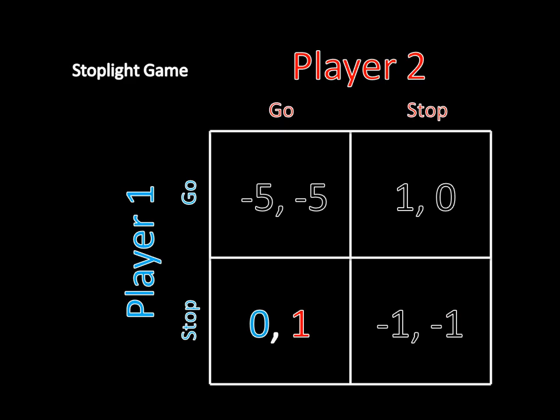This Nash equilibrium is where player one stops and player two goes. Now, these other two possibilities can't be Nash equilibria because if they were both going, that would cause a car accident. Either one of them could switch to stopping and that would ensure that they get a payoff of zero, which is better than causing this serious car accident. Likewise, if both are stopping, that doesn't make much sense. One could just go and do better because they get to drive off to their final destination as quickly as possible. So that leaves us with just two pure strategy Nash equilibria where one player stops and the other one goes.